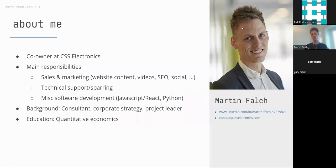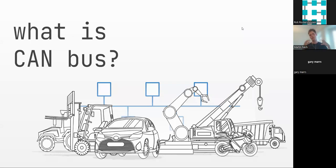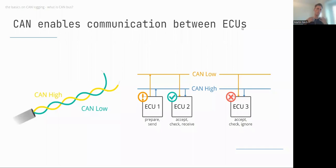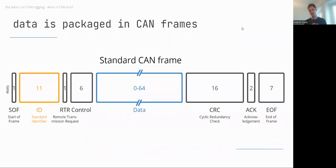Let me give a quick introduction to CAN bus for context. CAN bus is a technology that enables communication between CAN nodes or ECUs. In a vehicle, multiple small controllers communicate data through the CAN bus network. In simplified terms, the CAN bus network consists of a CAN High and CAN Low wiring harness. Data is transferred in packets called CAN frames, which include a CAN identifier and a CAN data payload.